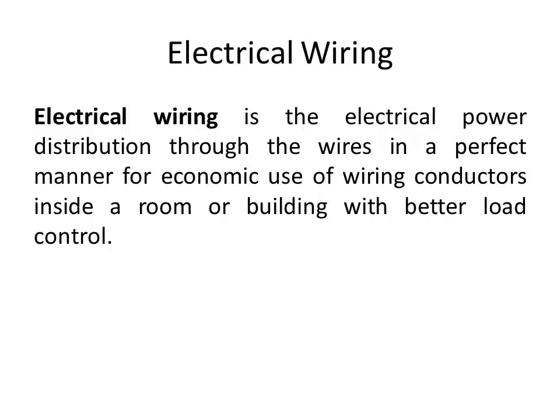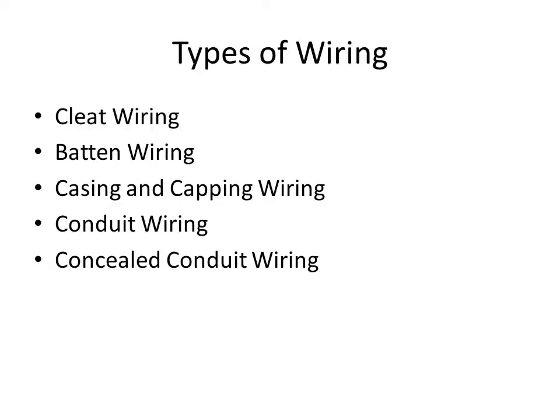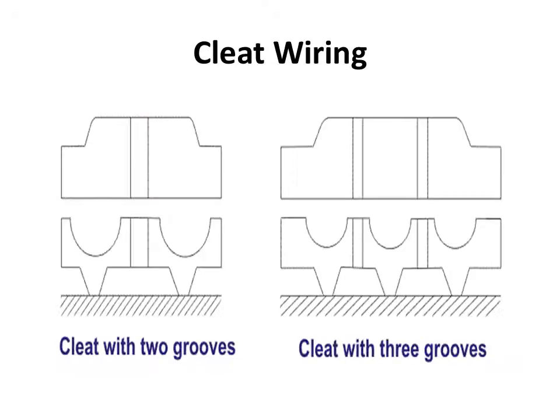The purpose is economic use of wiring conductors with better load control. The types of wiring are: cleat wiring, batten wiring, casing and capping wiring, conduit wiring, and concealed conduit wiring.